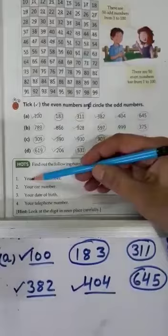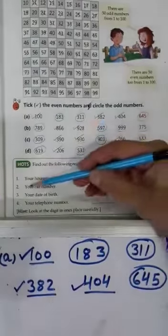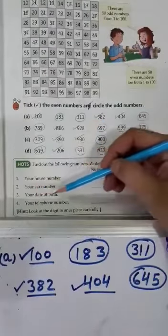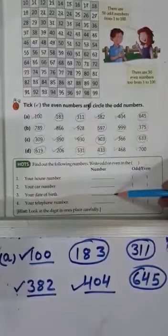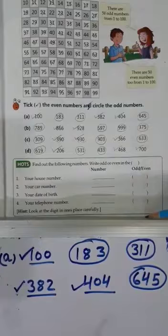For example, your house number. This means you have to write your house number. Your car number. Your date of birth number. Your telephone number. Your name number.